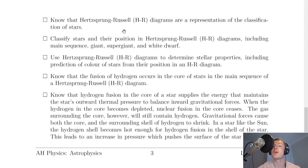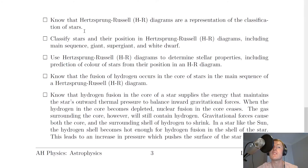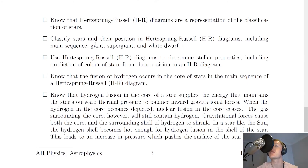You need to know that Hertzsprung-Russell diagrams are a representation of the classification of stars. You need to classify stars and their positions in HR diagrams, including the main sequence, giant, supergiant and white dwarf regions. You should be able to identify where these four regions are on an HR diagram, and place stars based on their description — whether they are cool or hot, dim or bright.